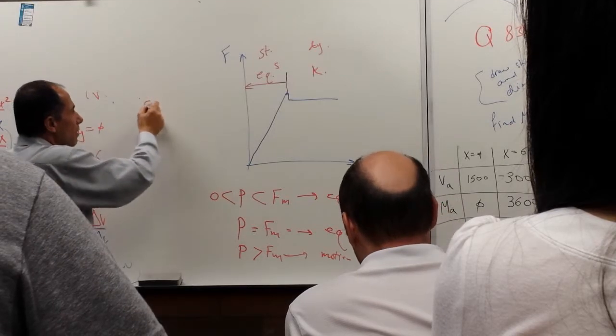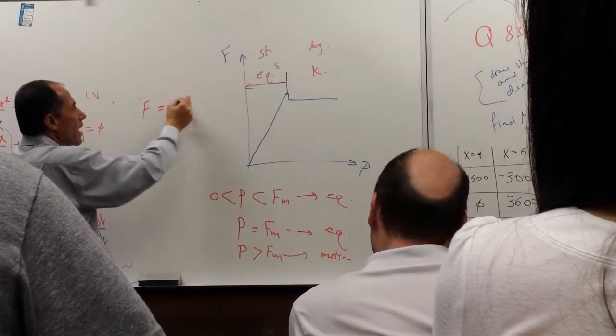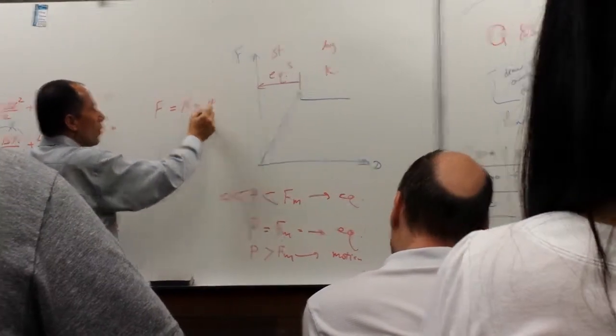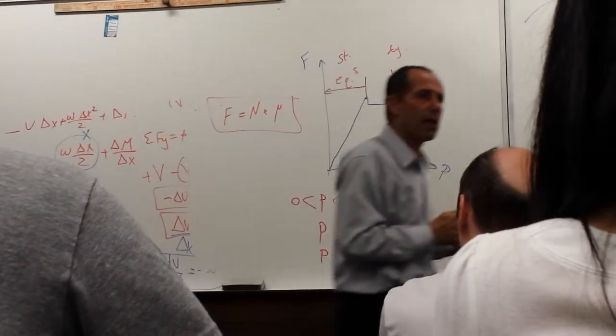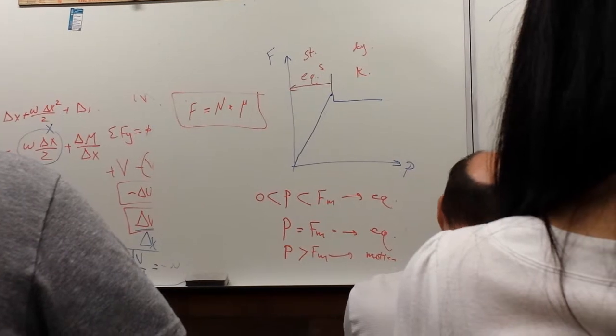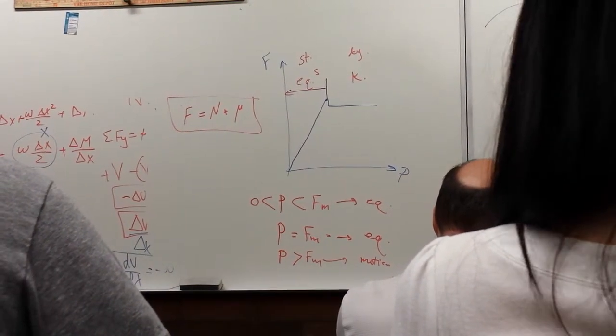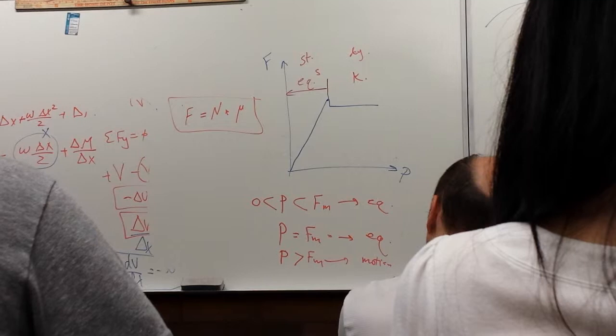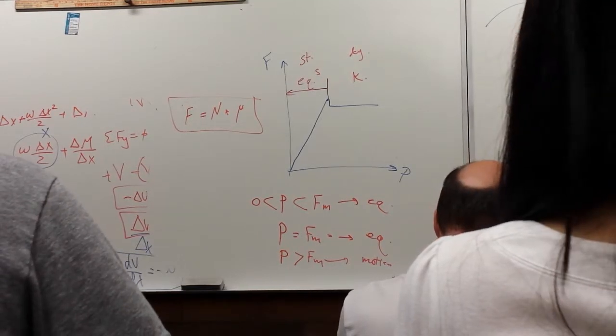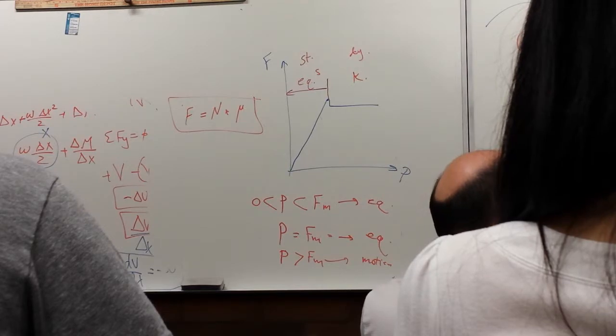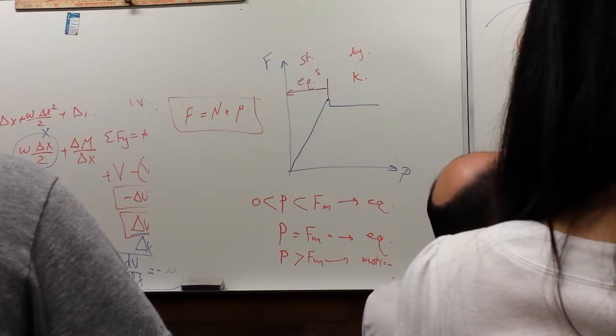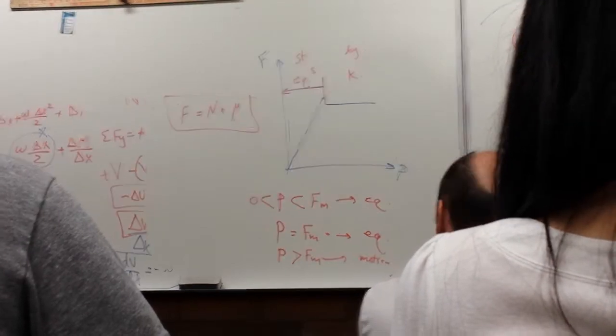The friction, the normal reaction times the mu. That is the general friction, how you would calculate the friction. What is the mu? The mu is constant, friction constant or constant of friction, whatever you want to call it. What is this? Depends on what? Material. Depends on the material, depends on the surface.